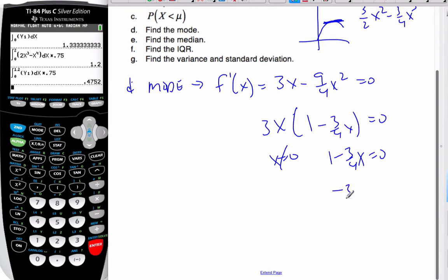Or 1 minus 3 quarters x is 0. So I get 3 quarters x is equal to negative 1. So x is equal to 4 over 3. So this is the mode. It's where the maximum occurs for that scenario.